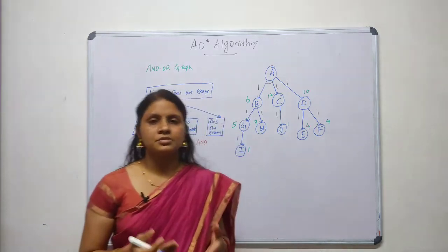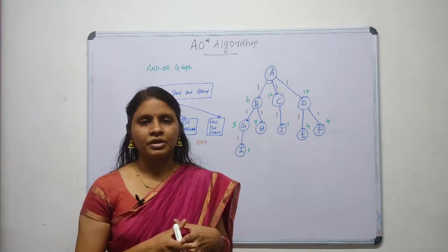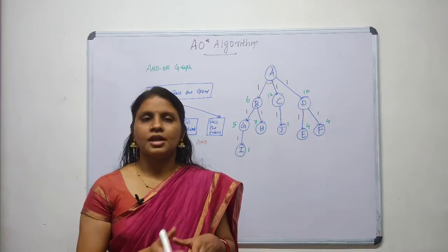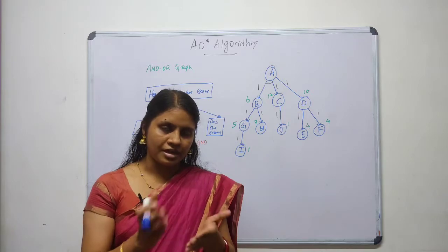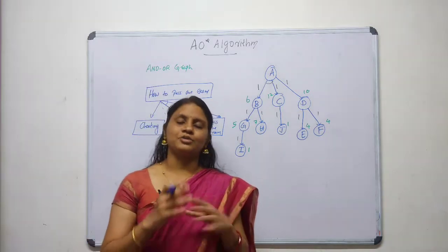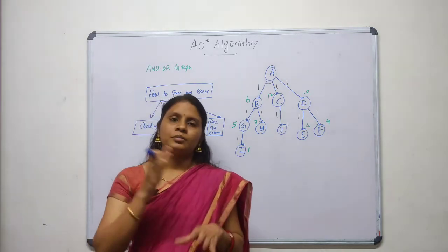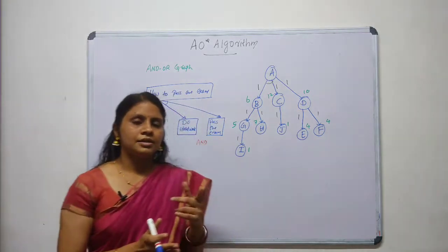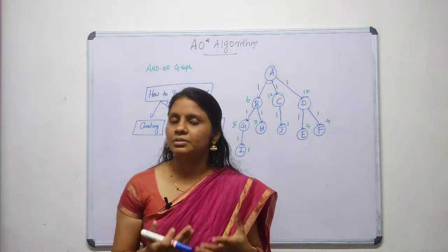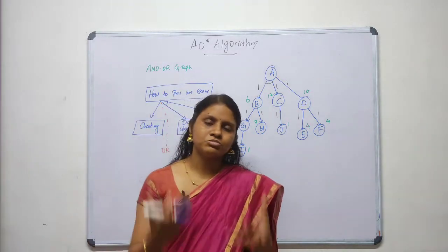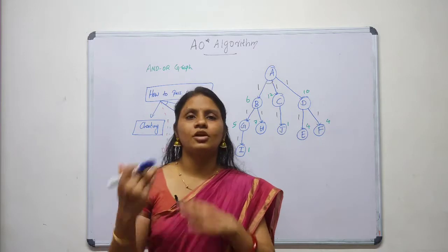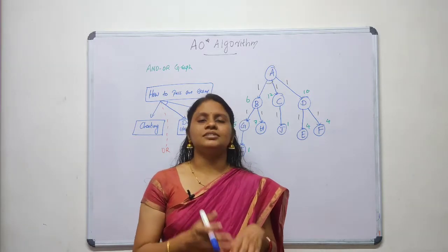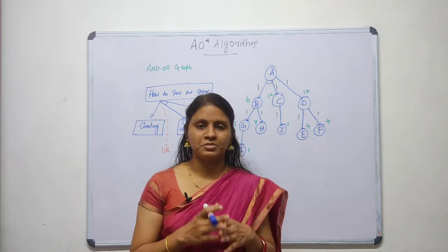So what is the difference between the ASTAR and AOSTAR algorithm? Both are informed search techniques and they both use heuristic values to solve the problem. The solution will be guaranteed in both algorithms. In ASTAR, we will be getting an optimal solution — shortest path with low cost. But AOSTAR does not guarantee that we will get an optimal solution.